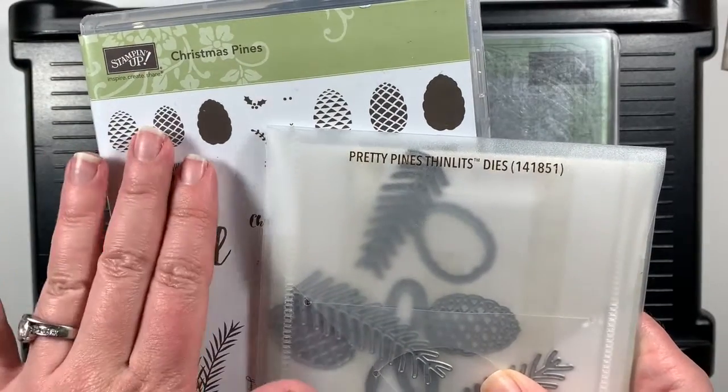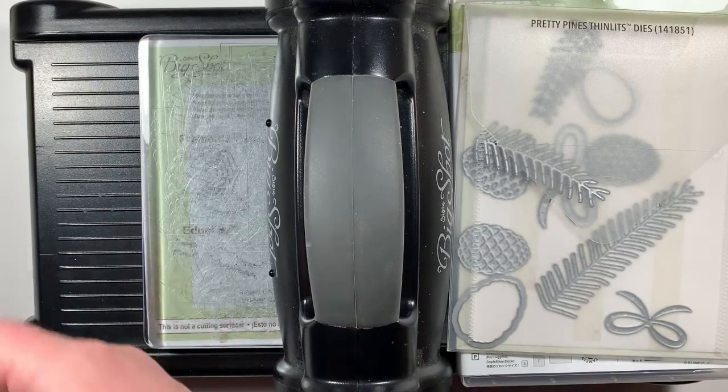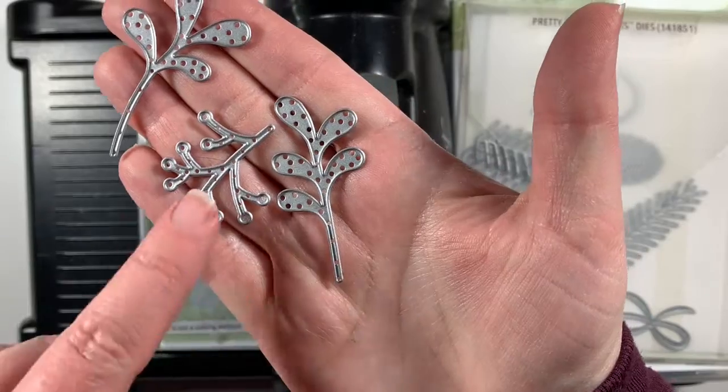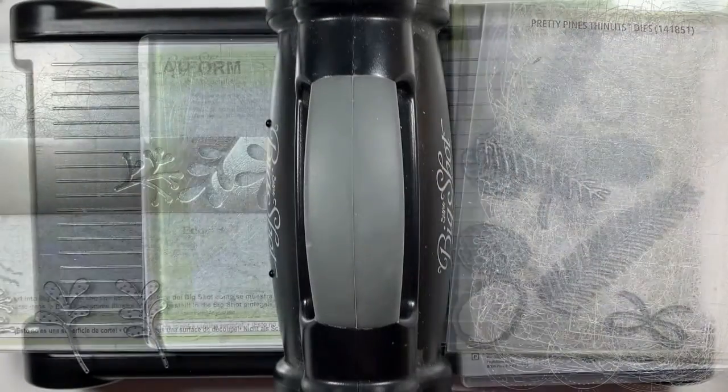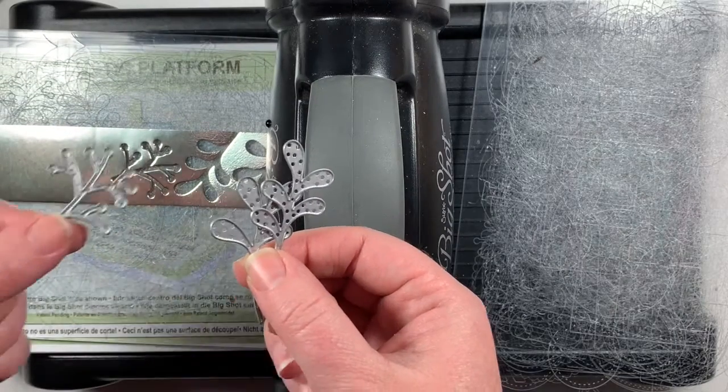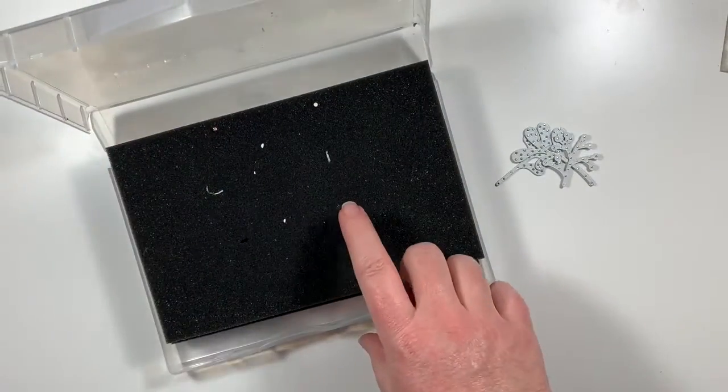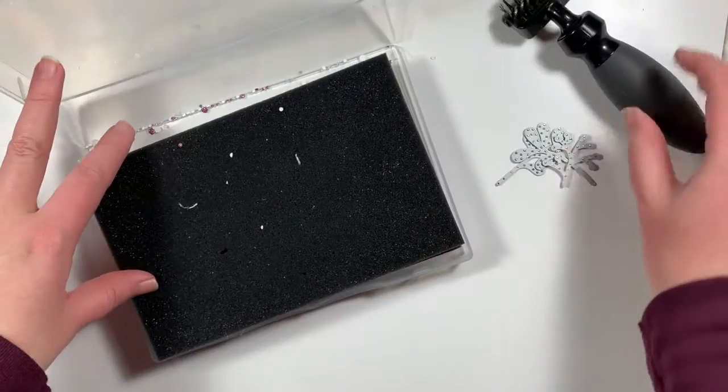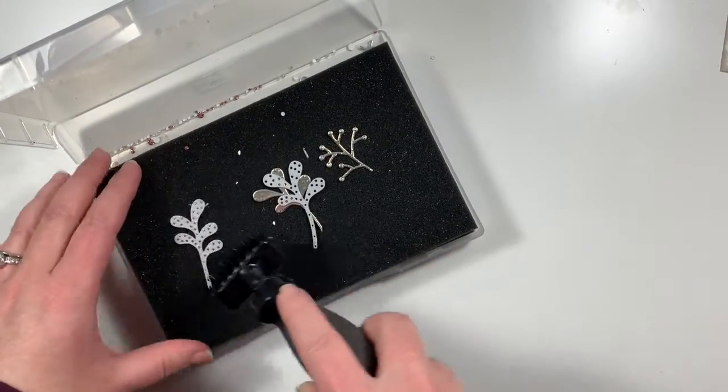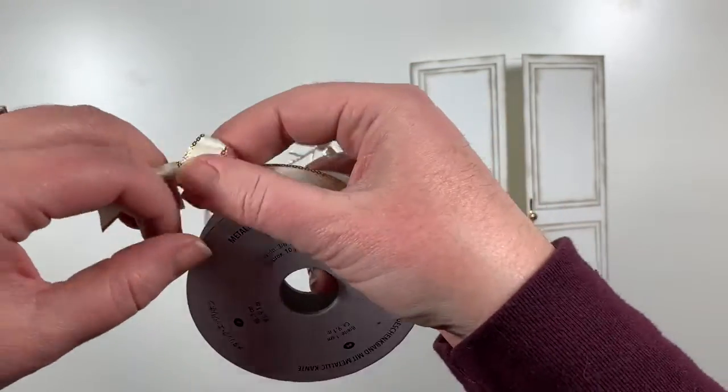The stamp and die set we're using on this card is Christmas Pines and the Pretty Pines Thinlets dies. For the Thinlets dies we're going to use three of those beautiful little greenery pieces. So I have those two sprigs here and then this little bunch of berries on twigs. I'm not sure what you would call that but these are the three pieces from that set we're using. So I have a piece of champagne foil here and I'm going to cut one each of these guys and I'm going to cut two each of this guy. So I have here the foam that comes with the die brush. I'm going to put my dies onto the foam, take the die brush roller and just roll it until those dies loosen away from the foil.